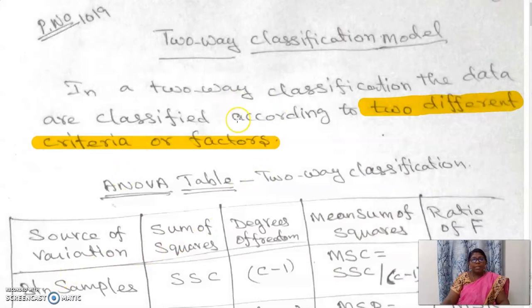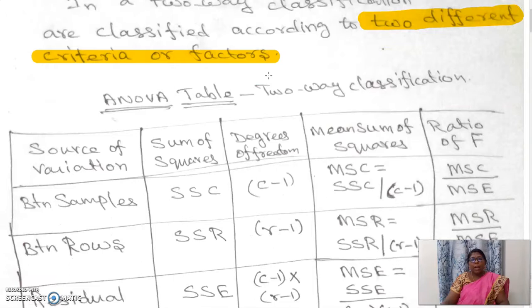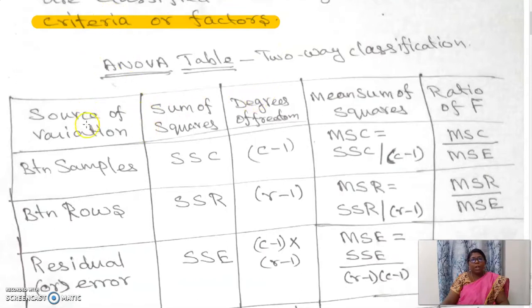In the two-way classification model, you can refer to your book page number 1019. In a two-way classification, the data are classified according to two different criteria or factors. Now here we have the ANOVA table for the two-way classification. The first column is source of variation, the second column is sum of squares, the third column is degrees of freedom, the fourth is mean sum of squares, and the last column is the F ratio.